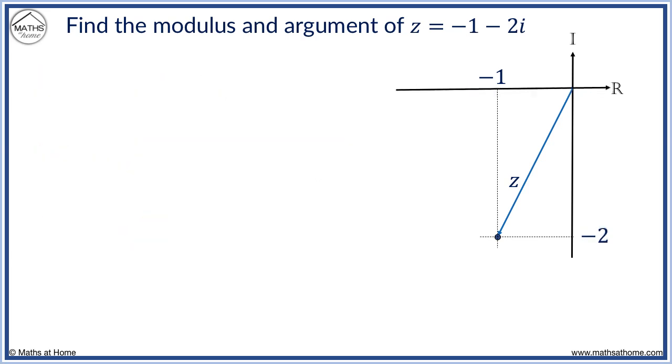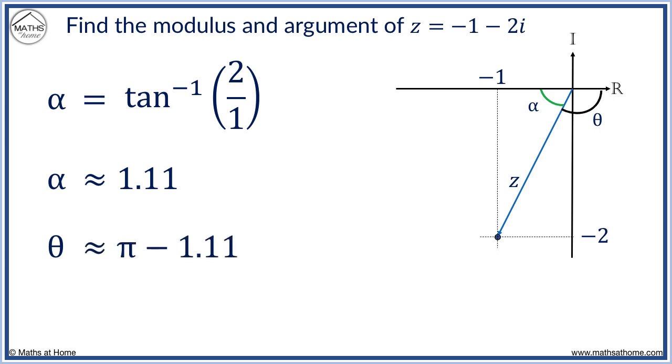The argument is measured in the nearest direction to the real axis. So we can calculate alpha and use this to calculate angle theta. Alpha equals arc tan 2 over 1, which approximately equals 1.11. Alpha and theta form a straight line. So theta equals pi minus 1.11, or approximately 2.03. So the argument is minus 2.03, as we have travelled clockwise from the real axis.